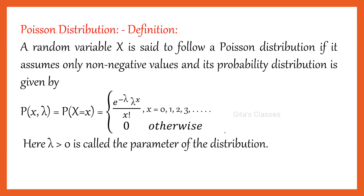Now let us see the definition. A random variable X is said to follow the Poisson distribution if its PMF is P(X = x) or P(x, λ) = e^(−λ) · λ^x / x!, where X can take the values 0, 1, 2, 3, etc., and 0 otherwise. That is, X cannot be negative — only non-negative values can be assigned.